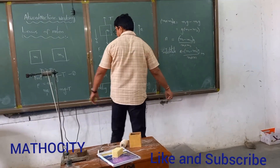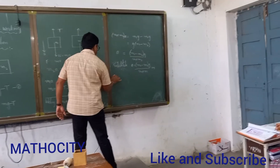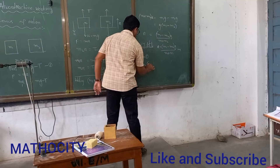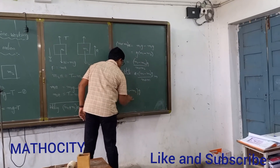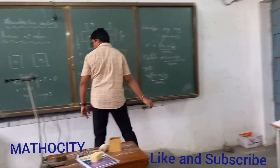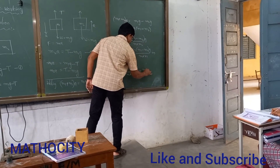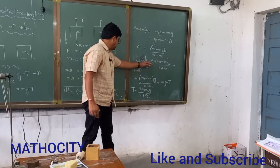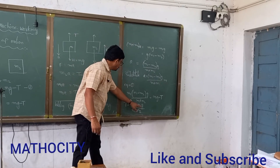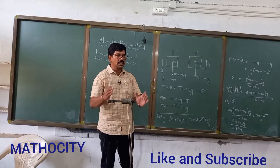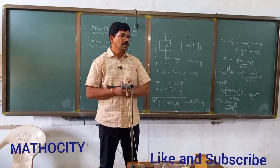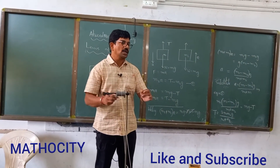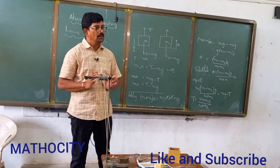Substituting A into equation one — M1A equals M1G minus T — we write M1 times (M1 minus M2)G divided by (M1 plus M2), which equals M1G minus T. From this we can solve for the tension T. This is the simple model to demonstrate the working of the Atwood machine. We calculated the acceleration produced in the string due to suspending loads on either side, and also determined the tension produced in the string. Thank you.